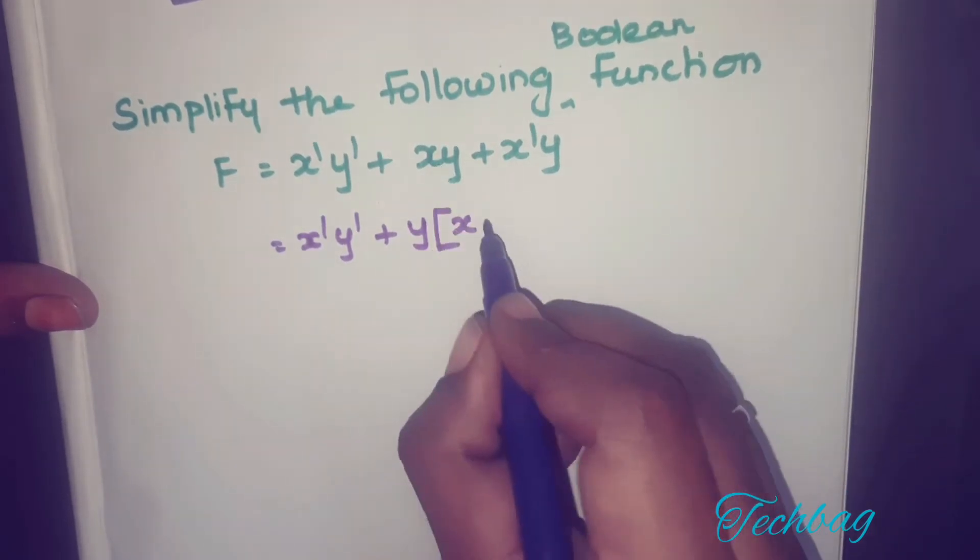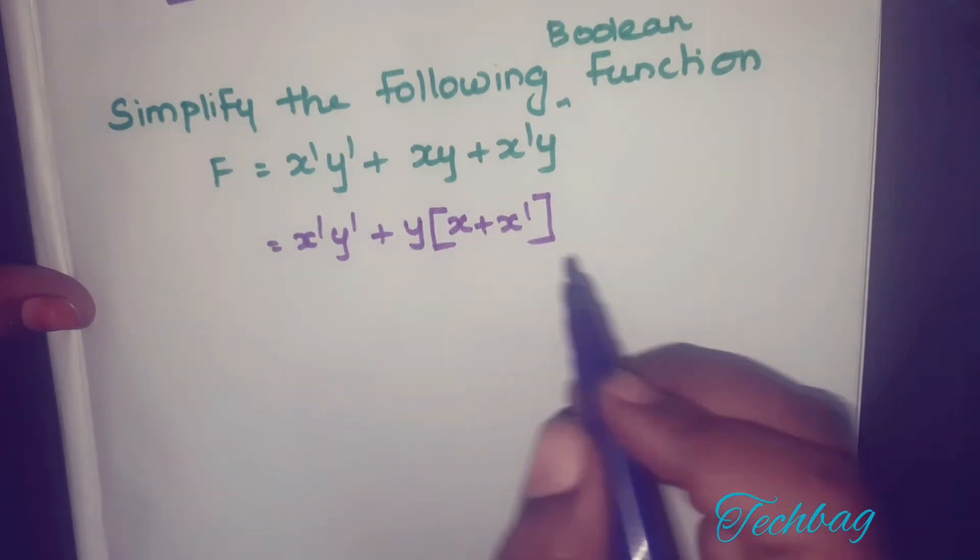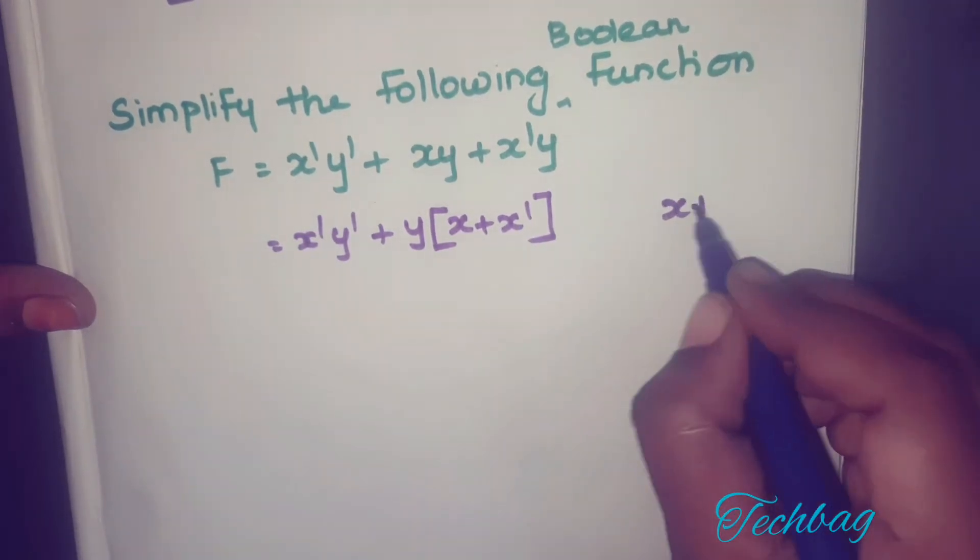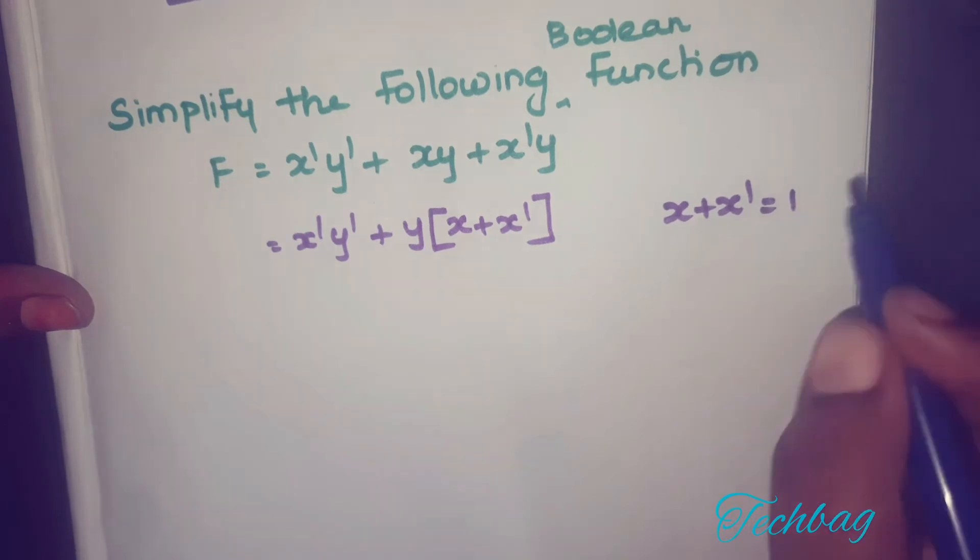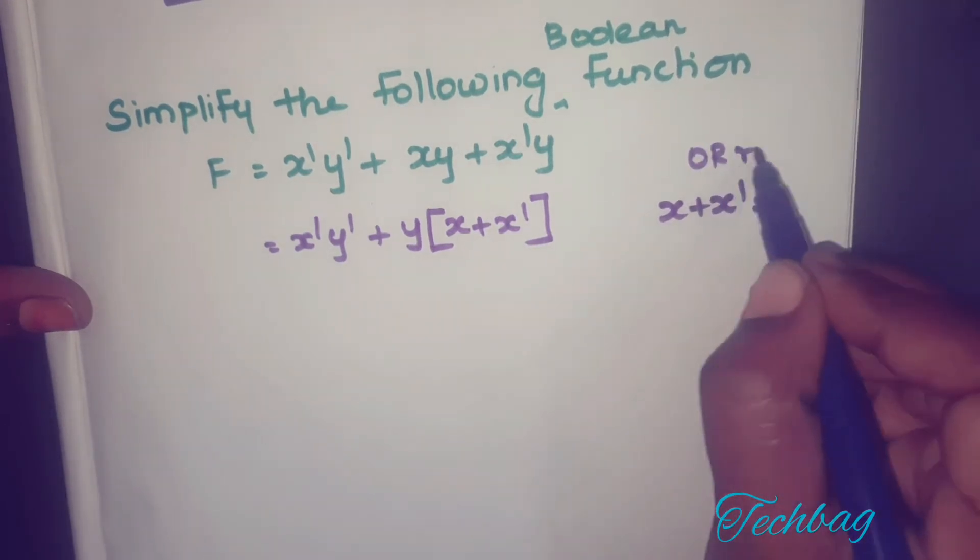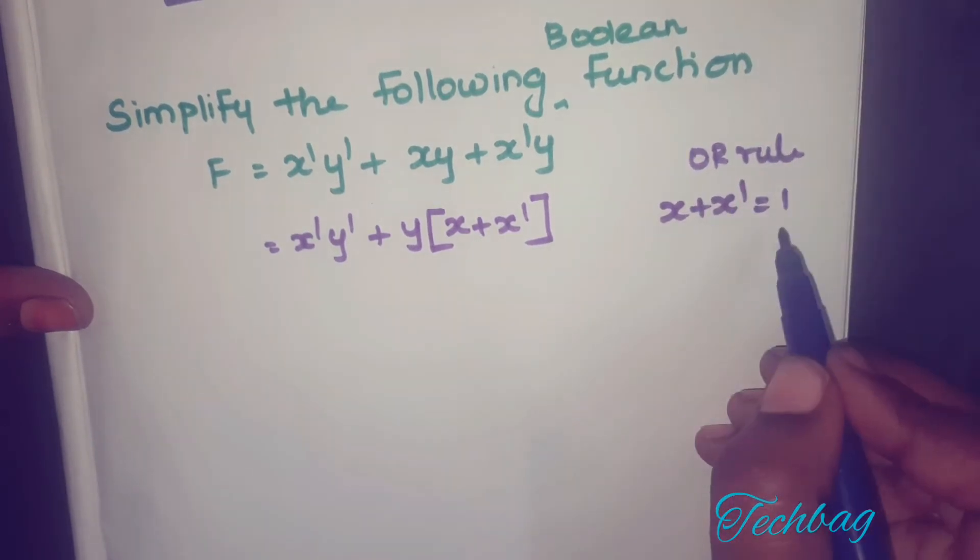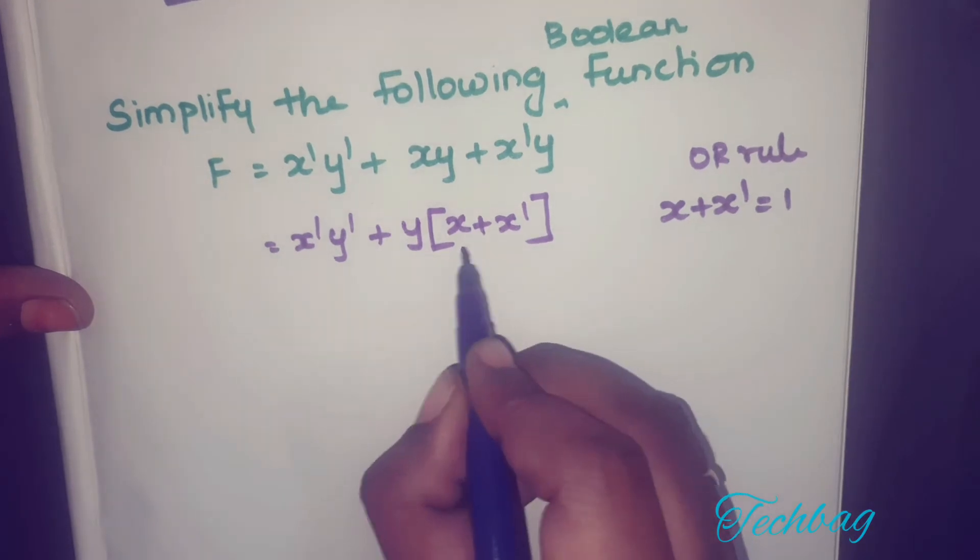The remaining terms are x and x'. You know that x + x' = 1. That is OR rule, one of the OR rules. x + x' equals 1, so this becomes 1.